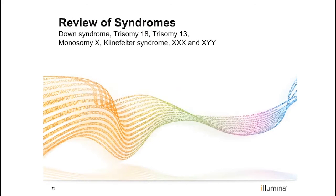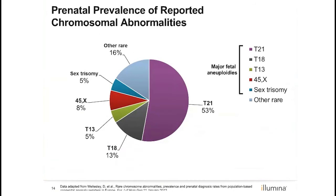Though theoretically any chromosome can cause aneuploidy, the reality is that very few aneuploidies can result in viable fetuses and live-born infants. These selected syndromes — Down syndrome, trisomy 18, trisomy 13, monosomy X, Klinefelter syndrome, triple X, and XYY — are aneuploidies that can result in live-born infants. Together, these syndromes account for approximately 84% of chromosome aneuploidies reported. Clearly, Down syndrome is the most prevalent aneuploidy.